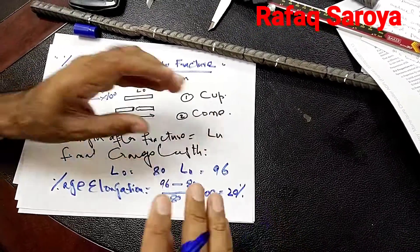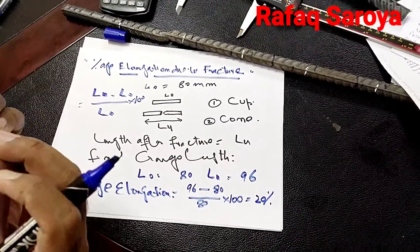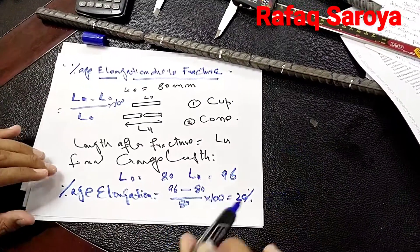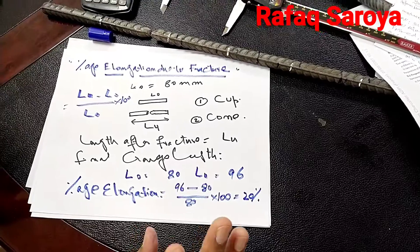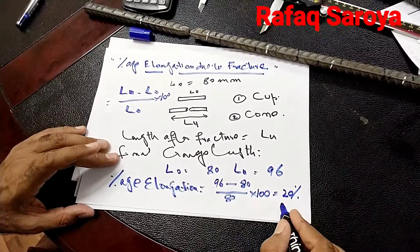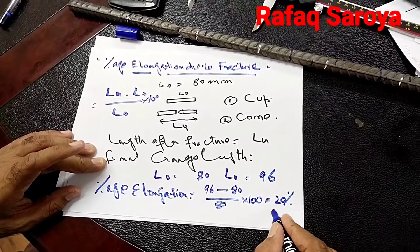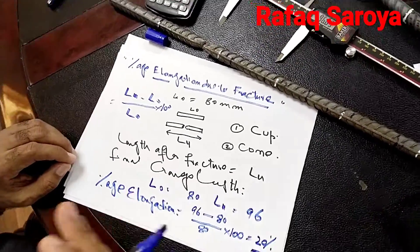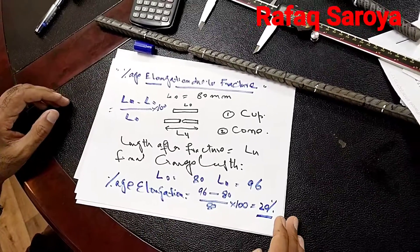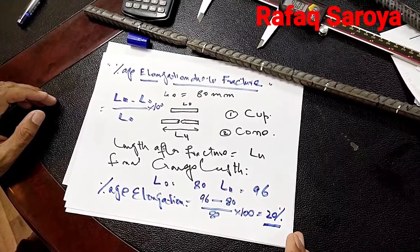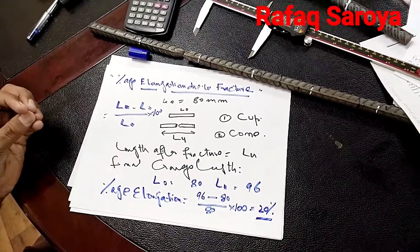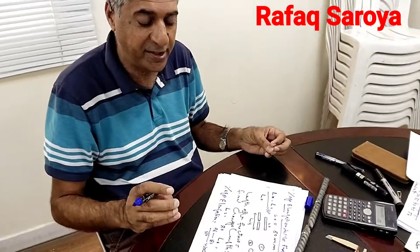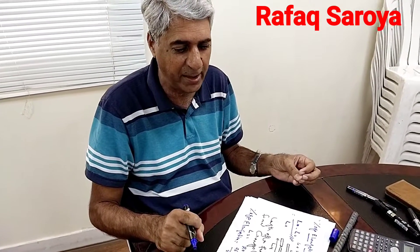This shows that before the material broke into two pieces, the change of length came out to be 20%. It is very important to know how much length change has occurred before fracture. Normally, if it is more than 15 to 18% it is accepted, because this is a low carbon steel — it is a TMT bar. So this 20% increment is very reliable and acceptable. Thank you for watching.